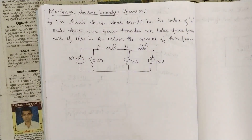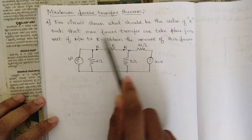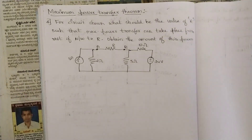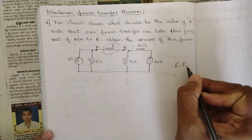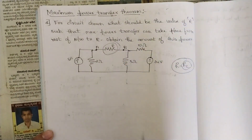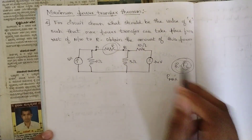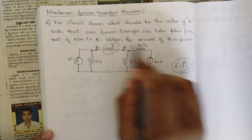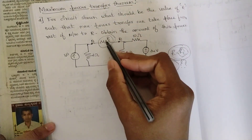Since this is a backlog paper there are chances of this question being asked, so I am going to solve two problems related to maximum power transfer. The first question: for the given circuit, what should be the value of R such that maximum power transfer can take place from the rest of the network to R? Also obtain the amount of this maximum power. They have asked us to find the load resistance R and the maximum power P_max.